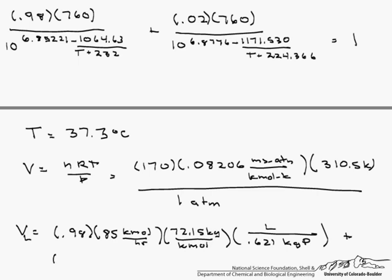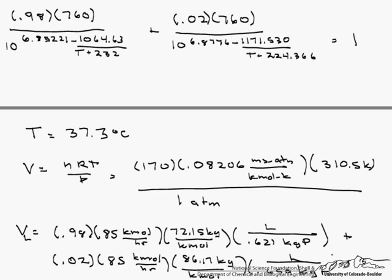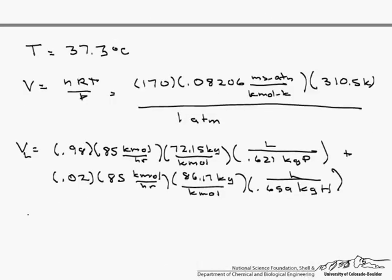Now we have to do the same for the hexane, .02 times 85 kmol per hour. And again, we are going to have different molar masses or molecular weights, 86.17 kg per kmol, and a different density, .659 kg of hexane per liter. And when we add this all together, our volumetric flow rate of the liquid product is 9.9 times 10 to the third liters per hour.